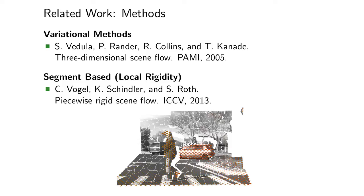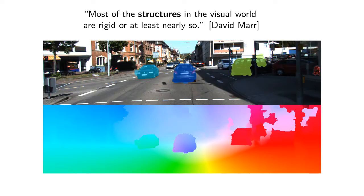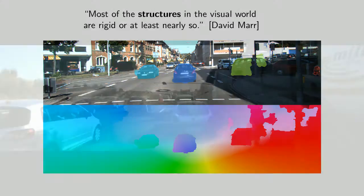Here, we follow the second line of work, but going even one step further. In contrast to enforcing rigidity of adjacent superpixels, we encourage whole structures in the scene, such as cars, or the static elements to follow the same rigid motion. We believe that this is a reasonable assumption, in particular for urban scenes, as illustrated in this video.